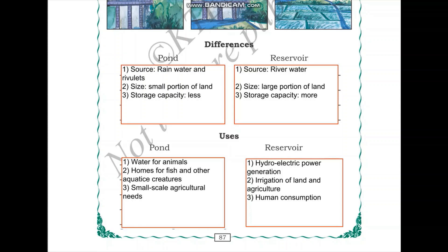Now let us look at the uses of ponds and reservoirs. Ponds are smaller sources of water. Domesticated animals like cows and even wild animals use ponds to drink water. Ponds are also homes for fish and other aquatic creatures. Ponds can also serve small-scale agricultural needs — the land surrounding a pond can make use of pond water during times of scarcity.